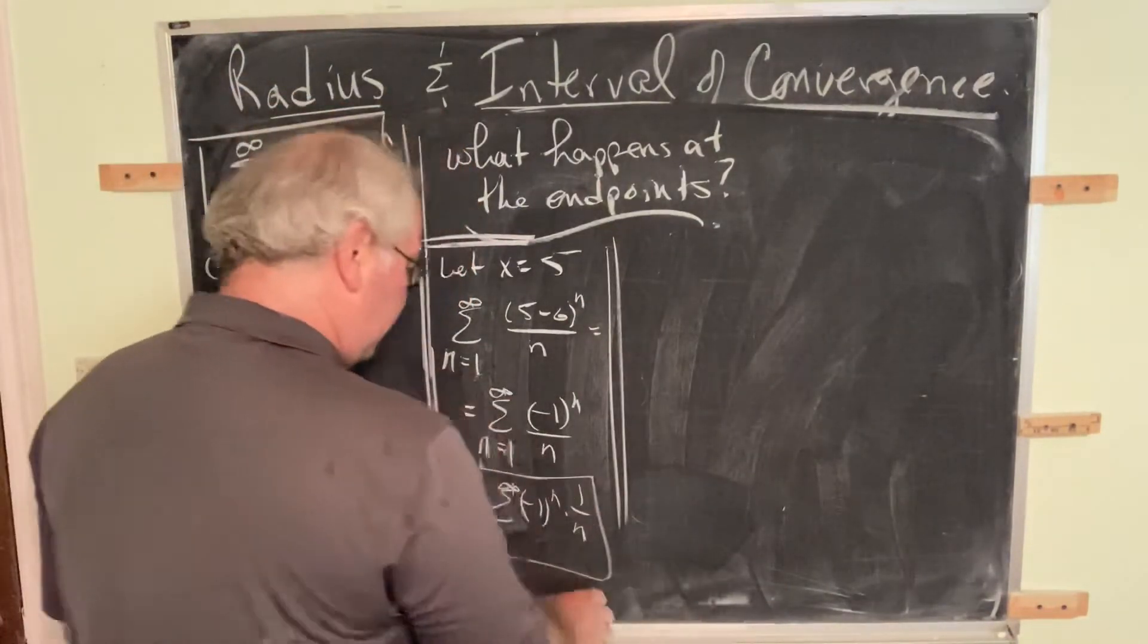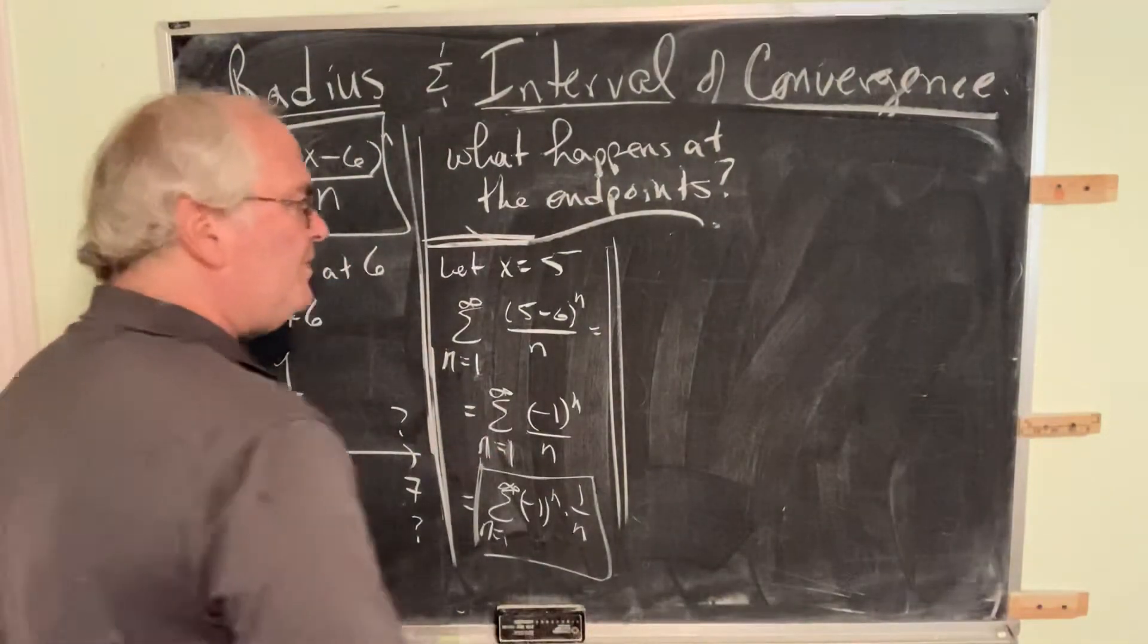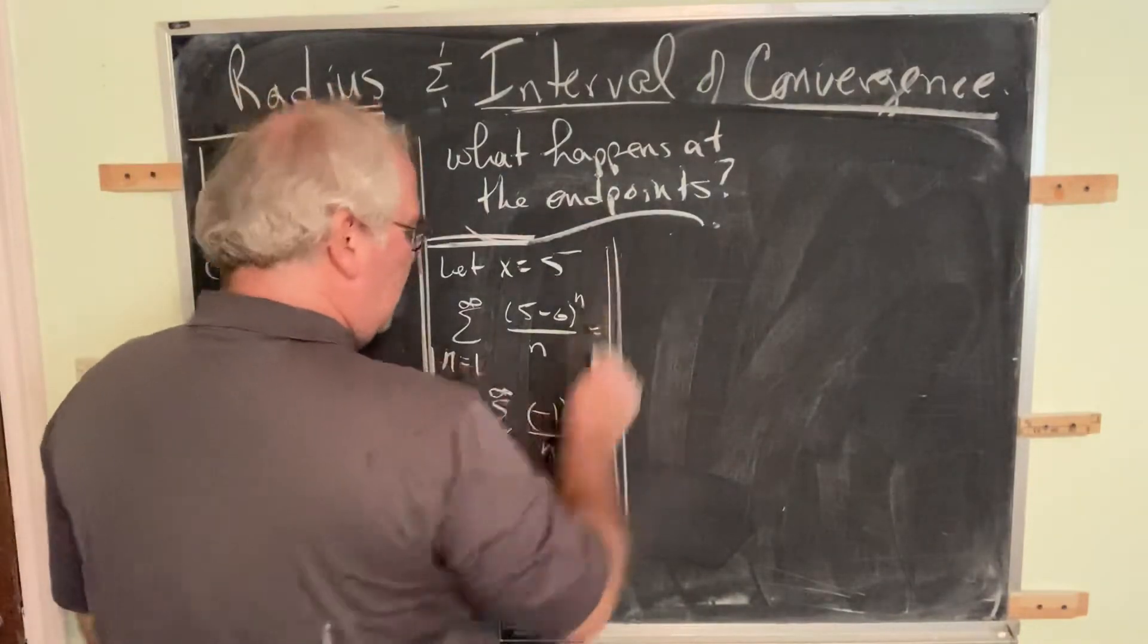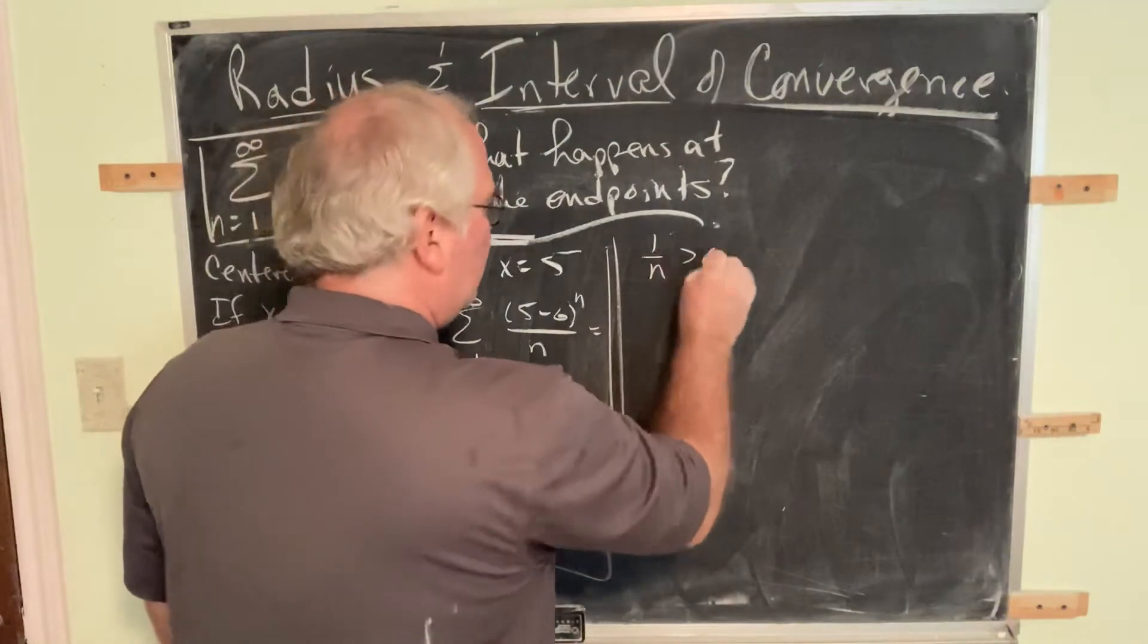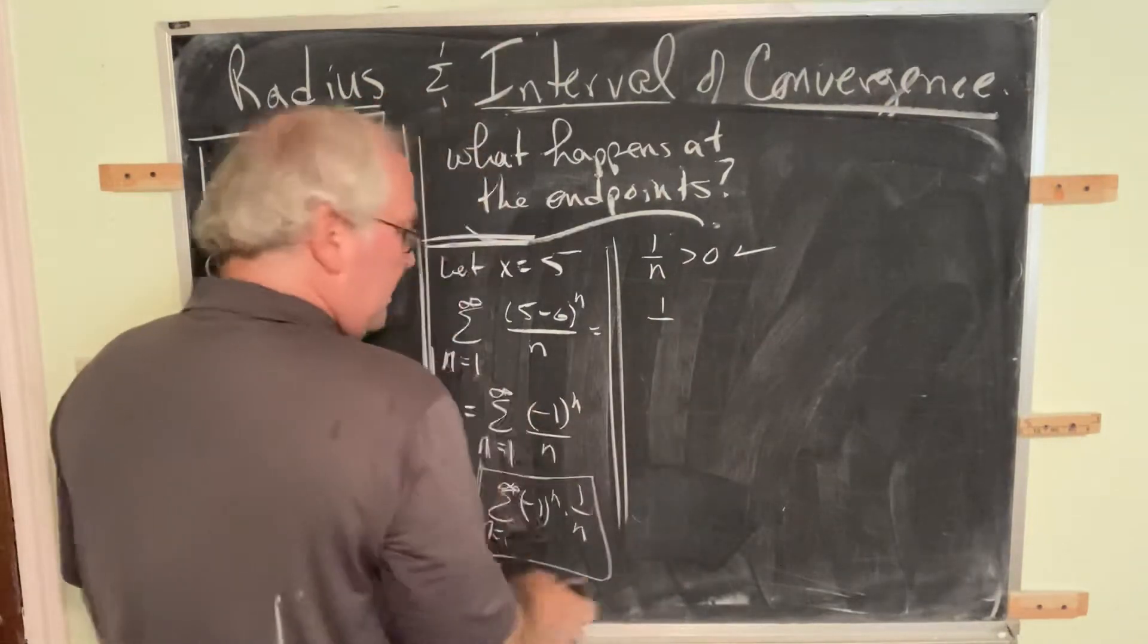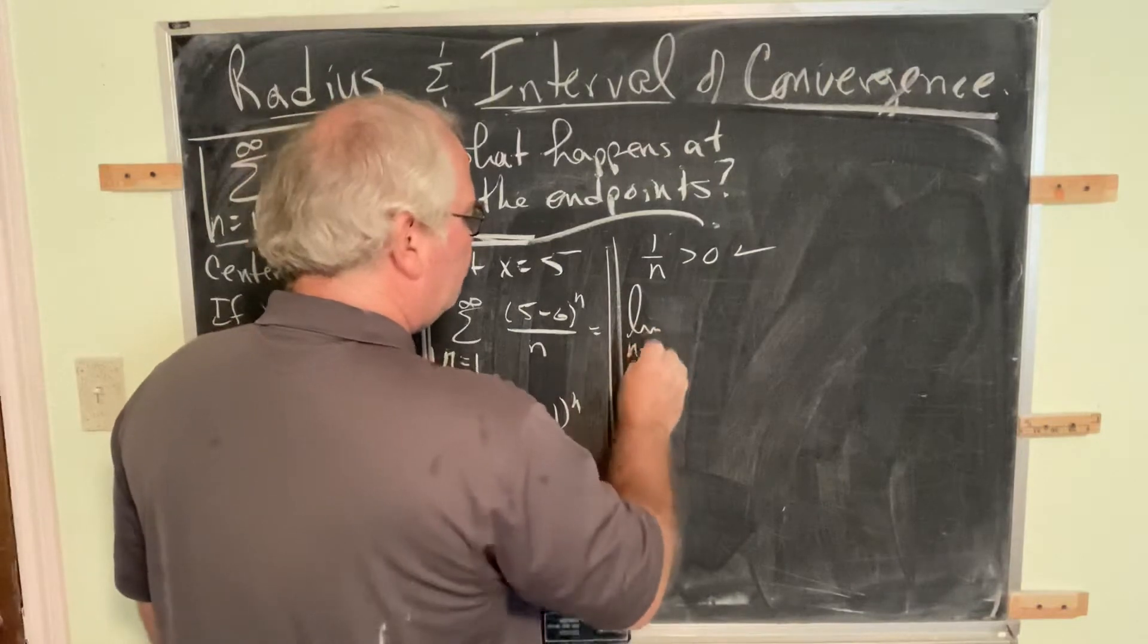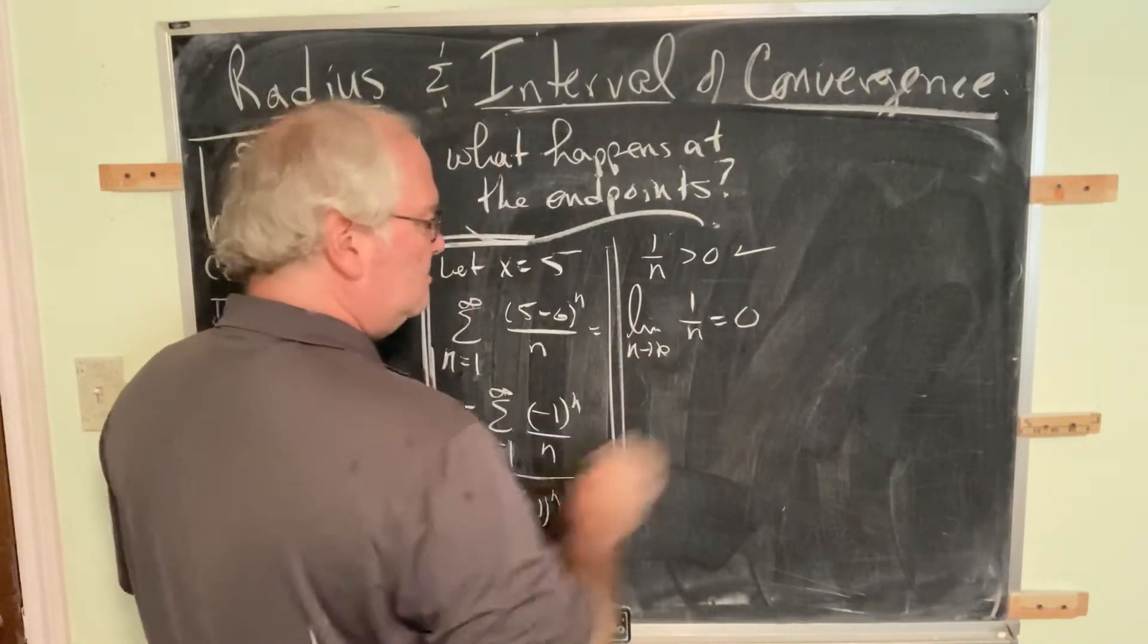We're going to apply the alternating series test. Luckily, you know the alternating series test, or at least you have the principles written down where you can get to them. We have to make sure the non-alternating portion must be bigger than zero. Check. The non-alternating portion must have limit equal to zero. The non-alternating portion must go to zero. Yes.